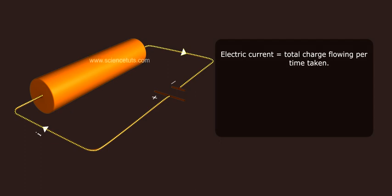Electric current, equivalent to total charge flowing per time taken. I equals Q by T.